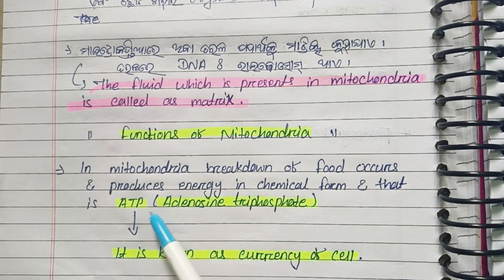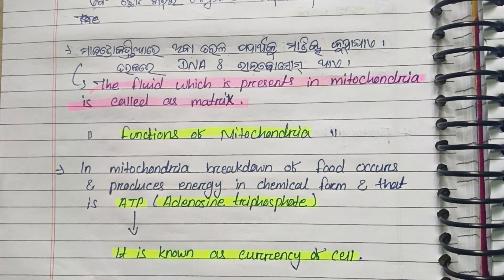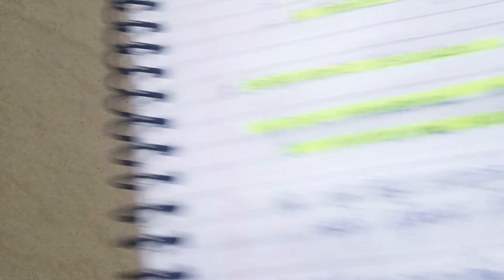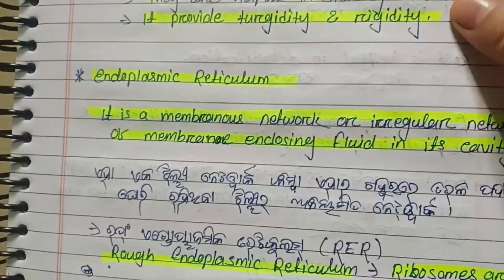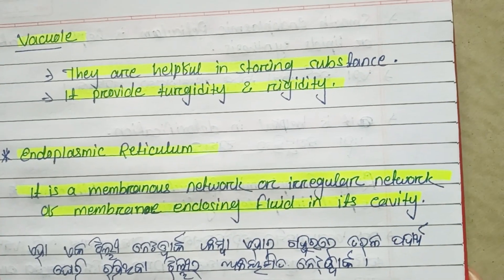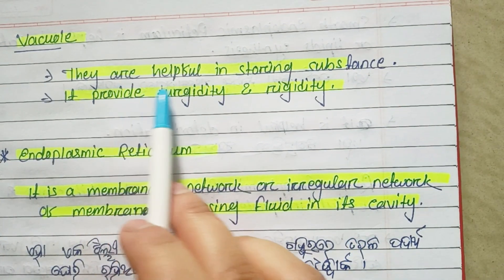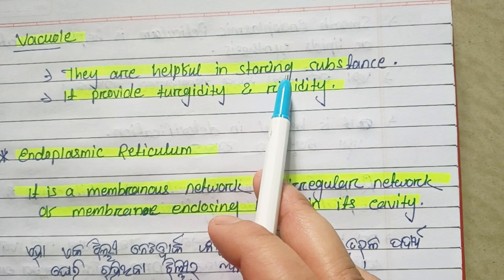ATP is known as the currency of the cell. Next, we have vacuoles. Vacuoles are helpful in storing substances.